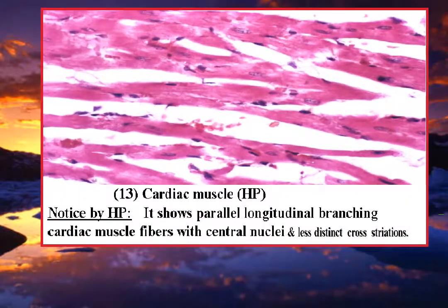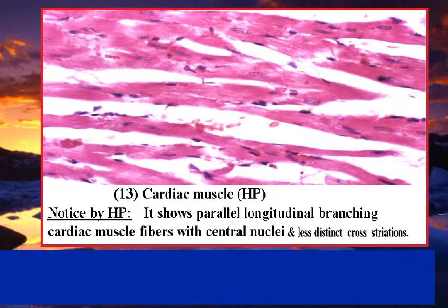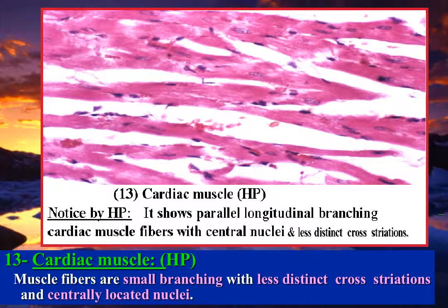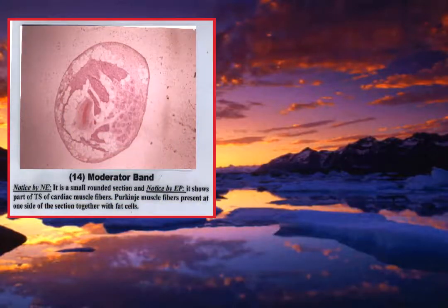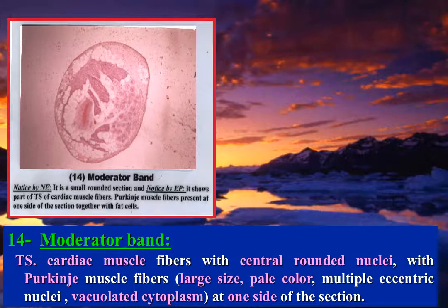Cardiac muscle fibers by high power: shows parallel, longitudinal branching cardiac muscle fibers with central nuclei and less distinct cross-striations. An example of the conducting system of the heart: the moderator band.